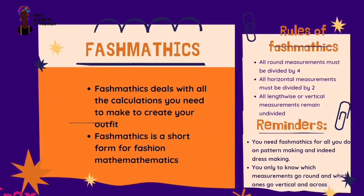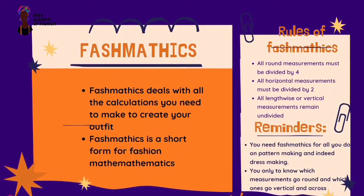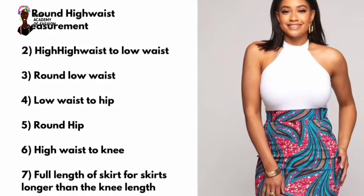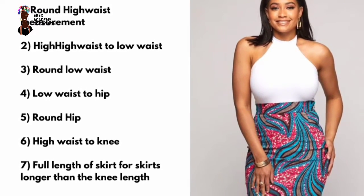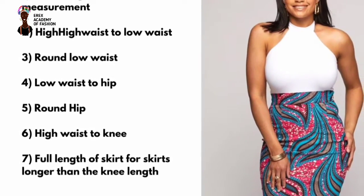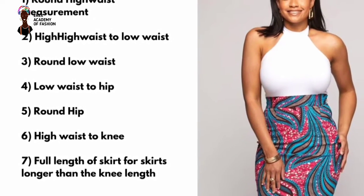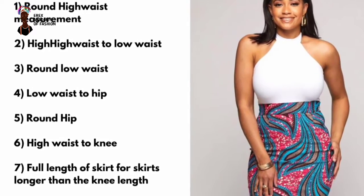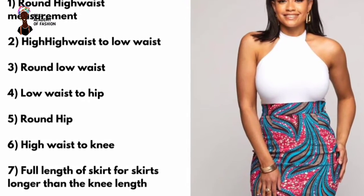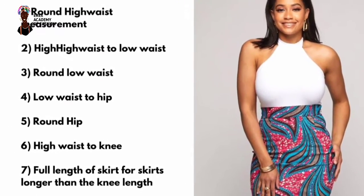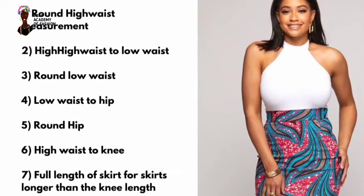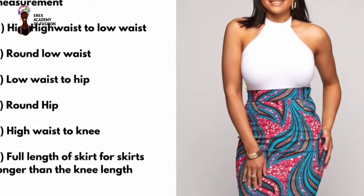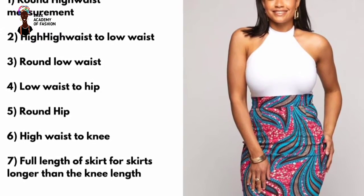The first rule is: all round measurements must be divided by four. The second rule says that all horizontal or across measurements must be divided by two. The third rule states that all vertical or lengthwise measurements must remain undivided. The reason will be explained in the next video.